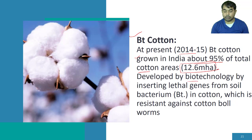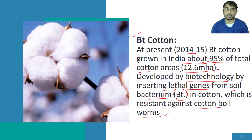It has been developed by biotechnology by inserting a lethal gene from the soil bacterium — Bt means Bacillus thuringiensis — into cotton, which is resistant against cotton boll worms. So the different types of boll worms discussed earlier — Bt has resistance against those.